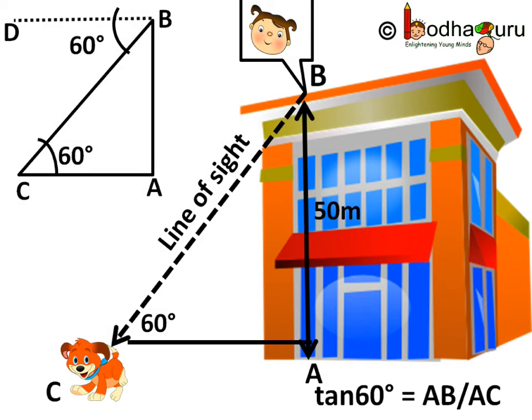Now we know the angle ACB which is 60 degrees, and the opposite side AB which is the height of the building, which is 50 meters. To find AC, which is the adjacent side of angle ACB, we can take the trigonometric ratio tangent.